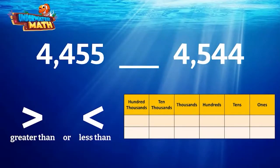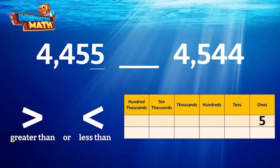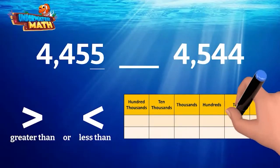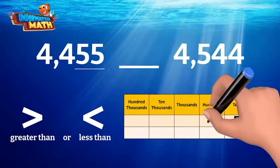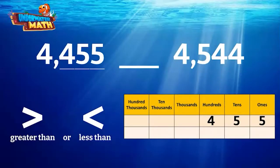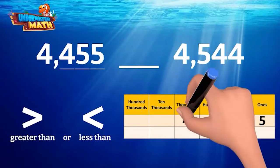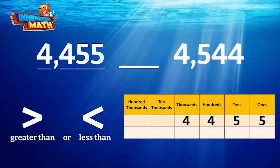Let's put the first number on top. Starting from the right, the five goes into the ones place. Another five is in the tens place. Then a four goes into the hundreds place and another four in the thousands place.